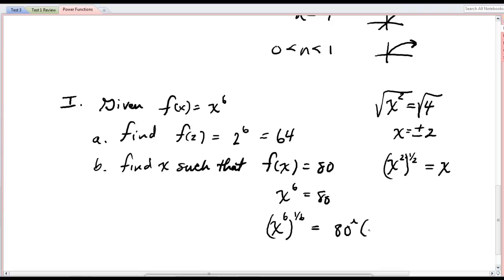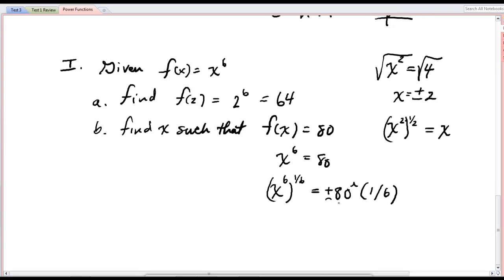So we're going to do 80 to the 1 sixth. However, because this is an even root, we're going to write plus or minus. So our answer will be whatever that is. Using a calculator to estimate it, we can say that it is plus or minus 2.075.